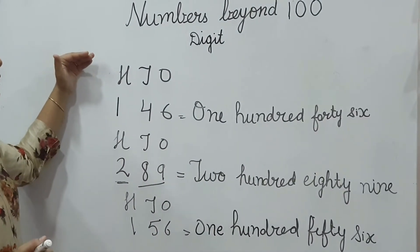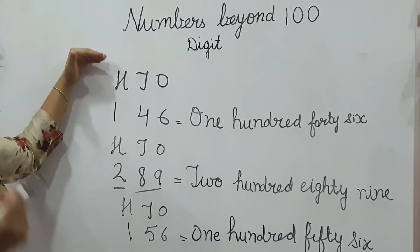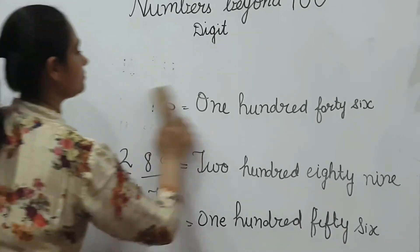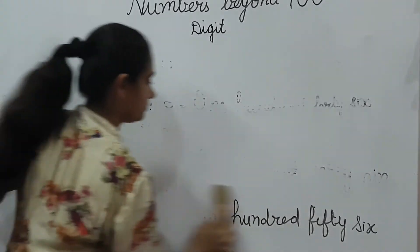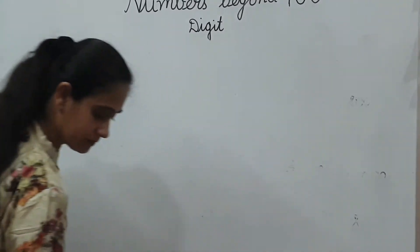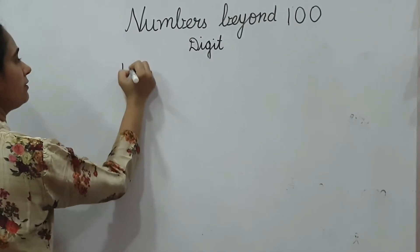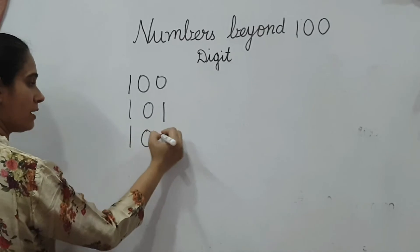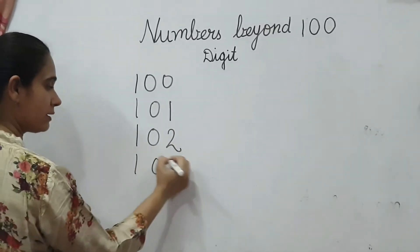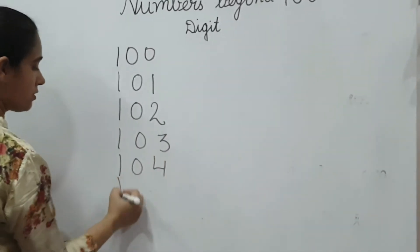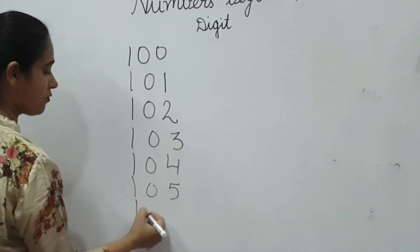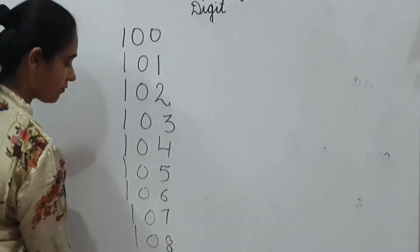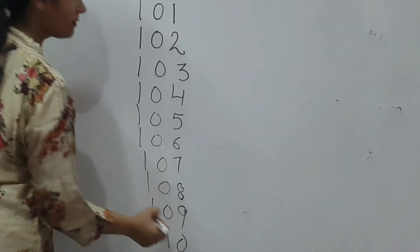So, now you will do these type of number names in your book. Firstly, you will write the counting. How you will write the counting? Look, 100, you know. After that, 101, 102, 103, 104, 105, 106, 107, 108, 109.